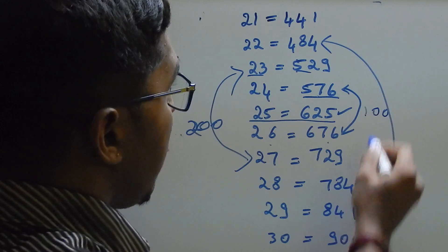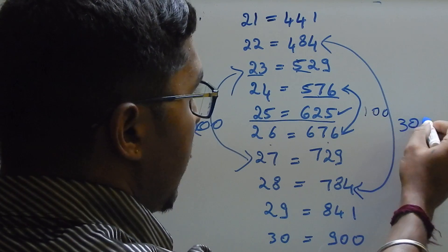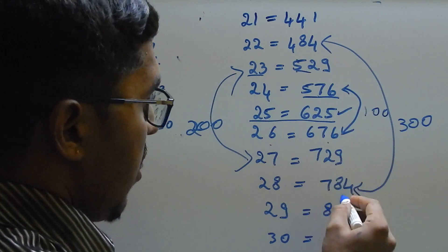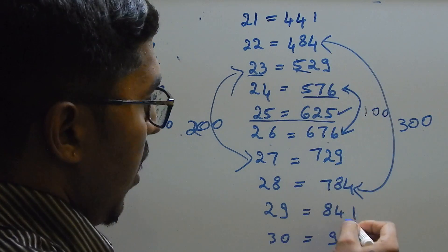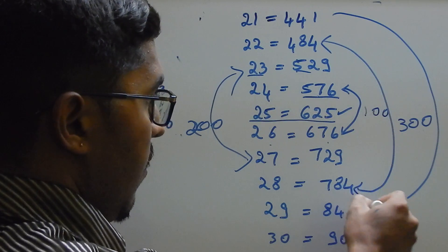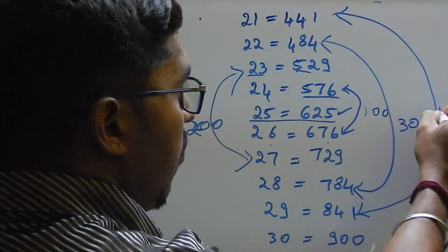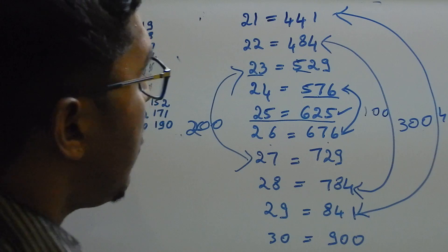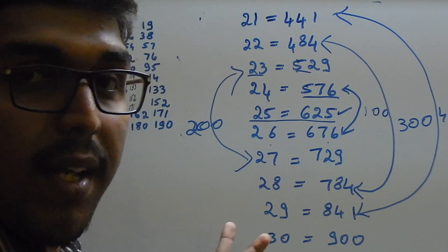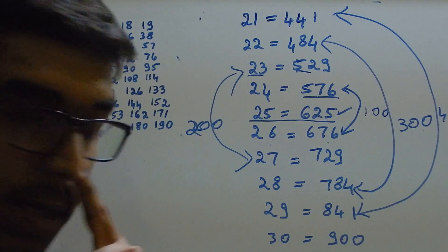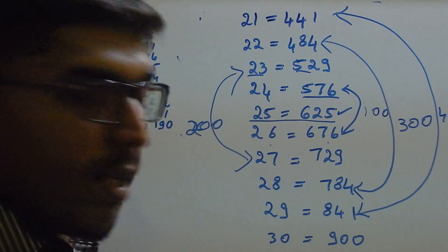Here 441, 841, 400 difference. You can observe here, 400 difference. So by this way you have to learn the squares and cubes of the numbers. This is it.